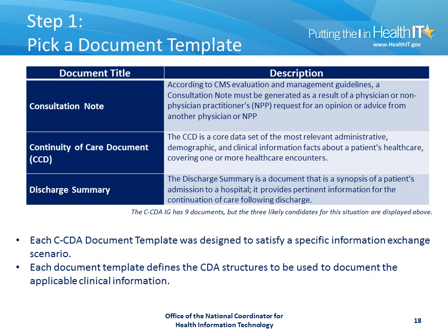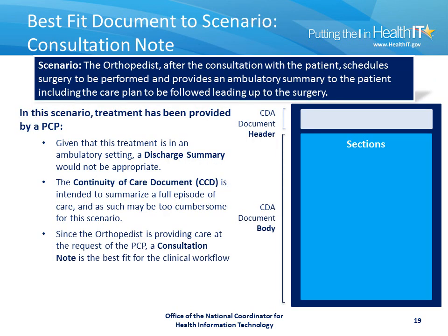As before, the first step in the process is to pick the appropriate document template. In this case, we're going to consider three different document types from the Consolidated CDA Implementation Guide, keeping in mind the specific information exchange requirements for this scenario. Given that this is an orthopedist performing a consultation on behalf of a primary care provider in an ambulatory setting, a Discharge Summary isn't appropriate, and the Continuity of Care document may be too heavy for this scenario. A Consultation Note might be the best fit for this clinical workflow.